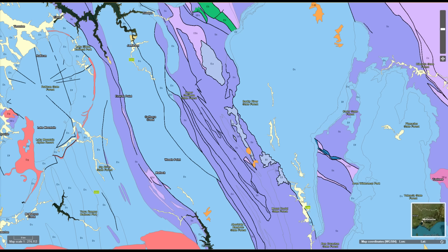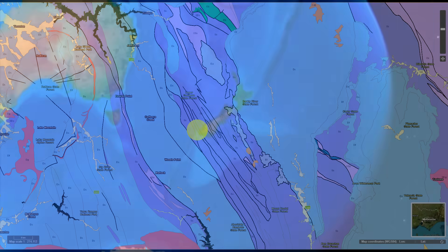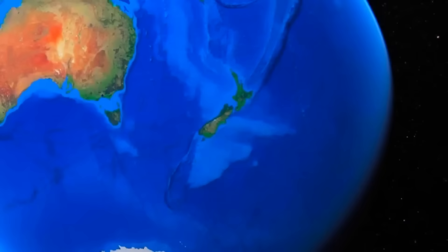So the earthquake that occurred yesterday morning mobilised ancient fault lines that are still in motion today. The reason for their movement has been attributed to the geological processes that are occurring in New Zealand, which is transferring energy through the crust of the earth, beneath the Tasman Sea all the way to Victoria.